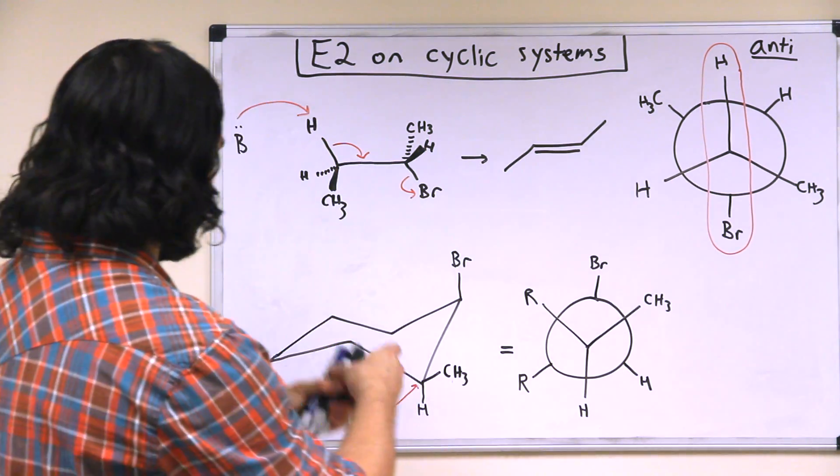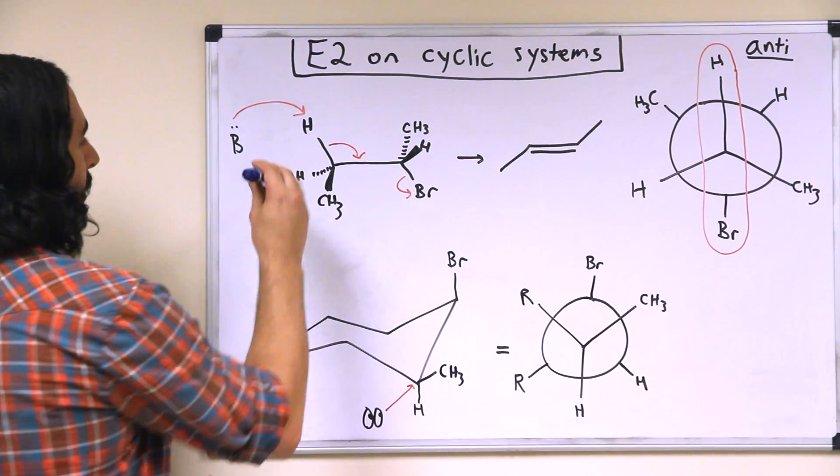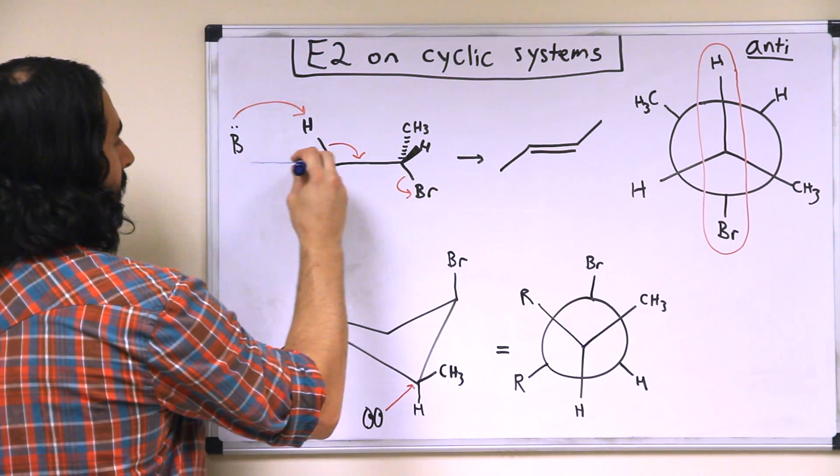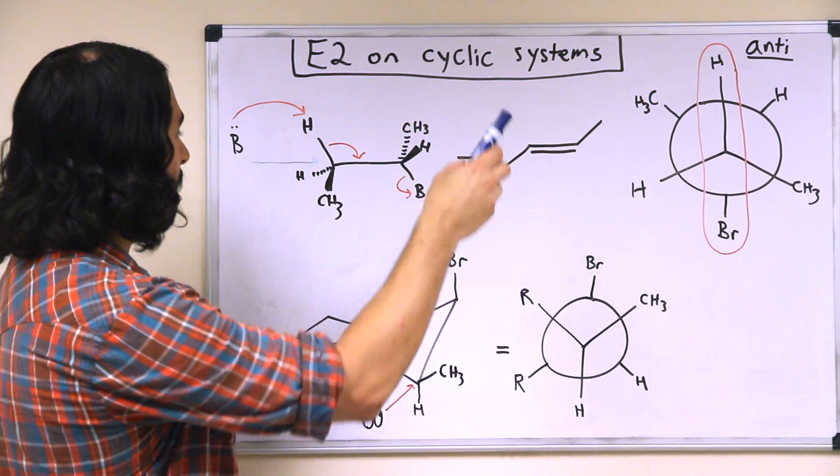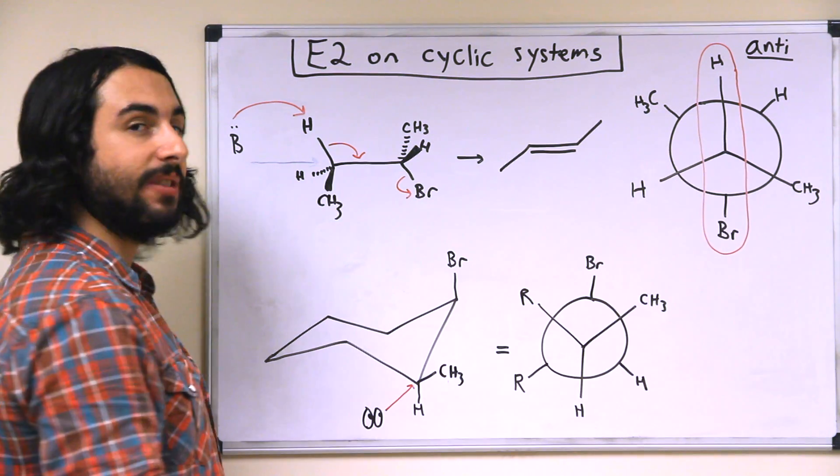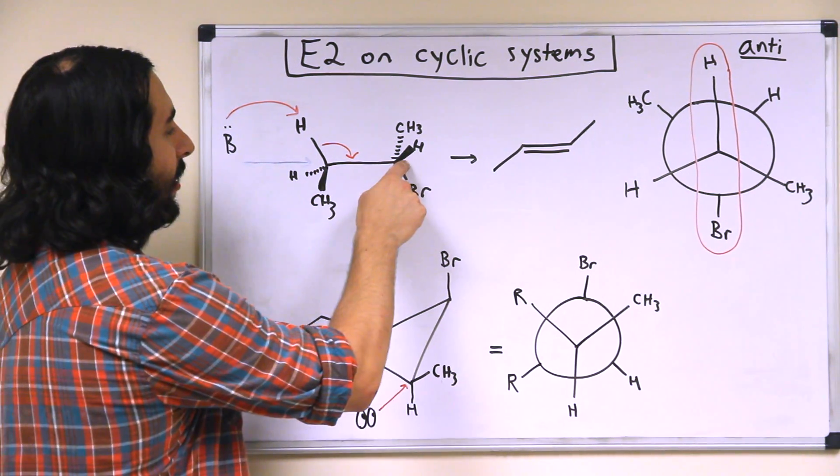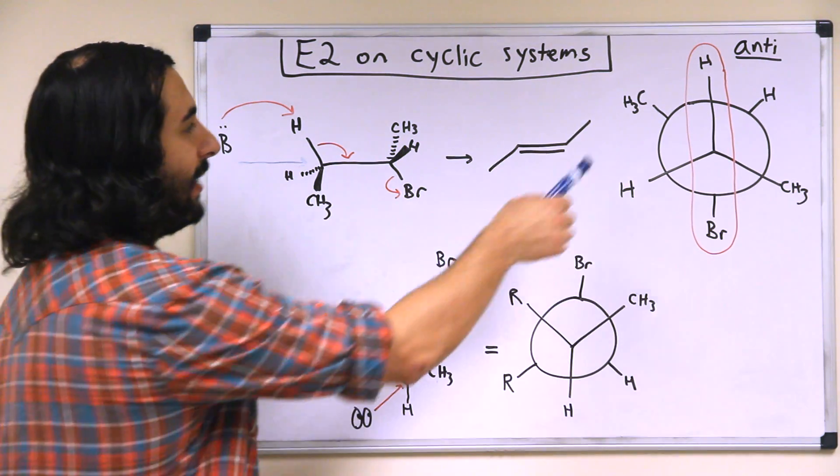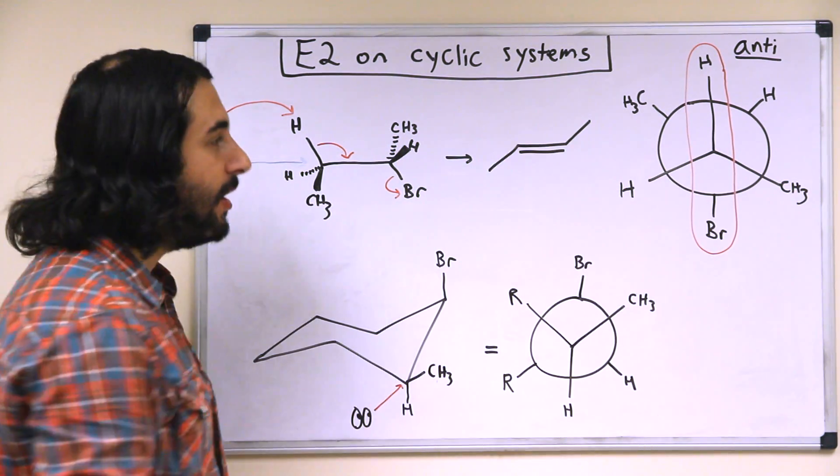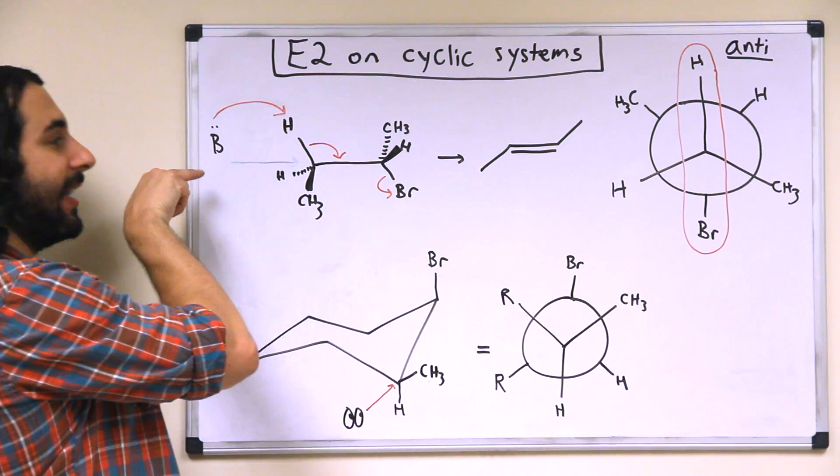If we take a look at this Newman projection, let's say we're looking this way down the bond right there. We're going to see the hydrogen directly up, the methyl down to the right, the hydrogen down to the left, and then on the back carbon that bromine is going to be down, the hydrogen is up and to the right, and the methyl is up and to the left.